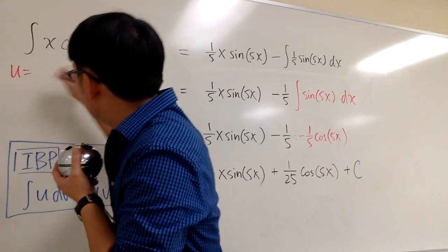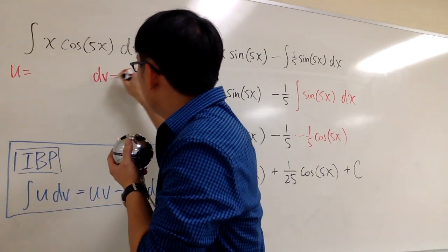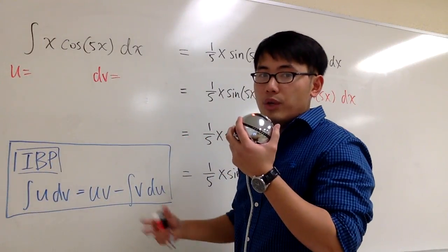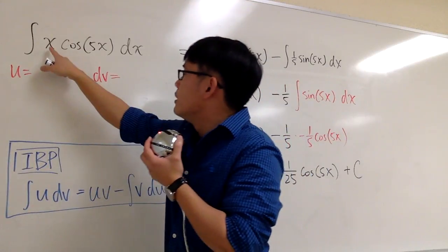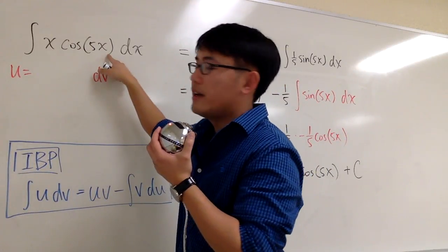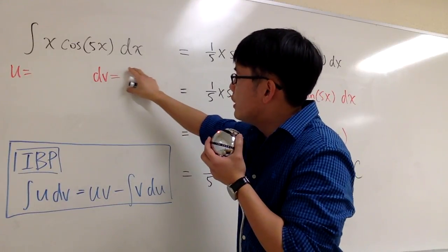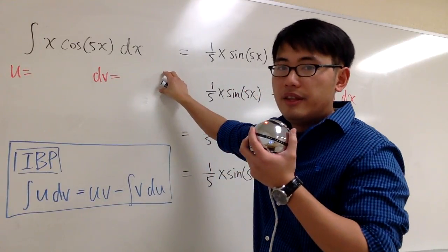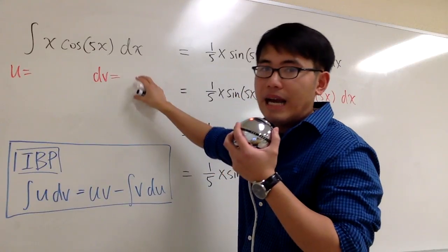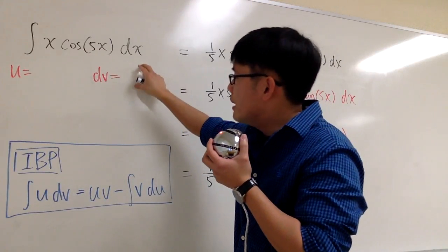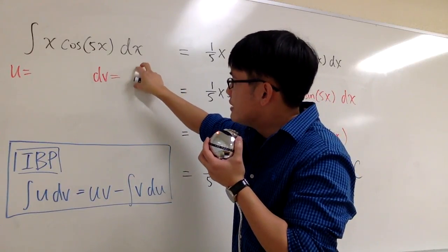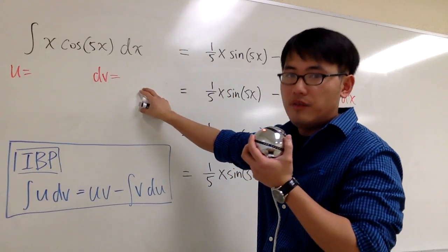So I'm going to pick u right here. I'm going to write down dv right here. And we have two choices, namely x and cosine of 5x. Technically, you should consider what you should put down for dv, because the things that you put down for dv, we have to integrate that. We must make sure to choose something that we know how to integrate for dv.